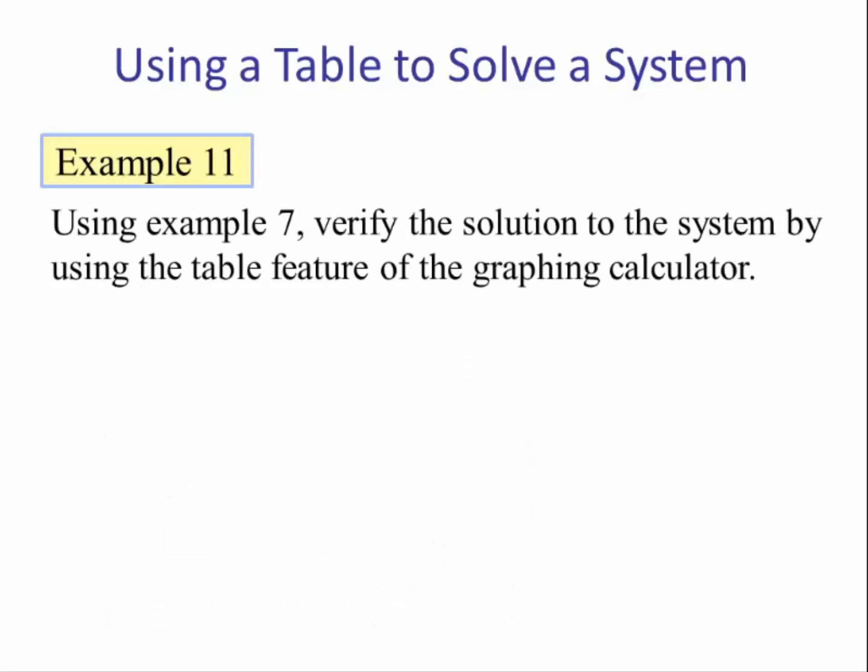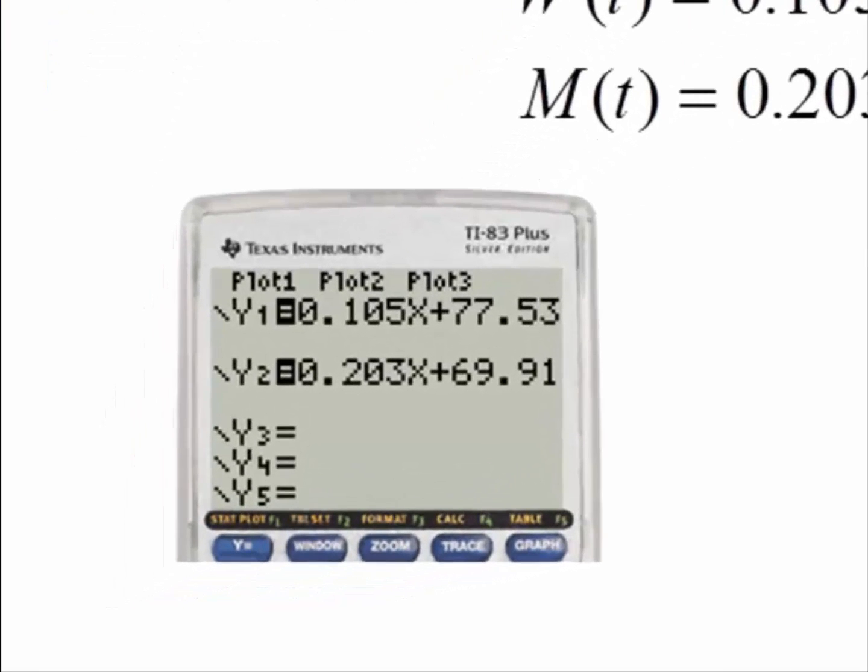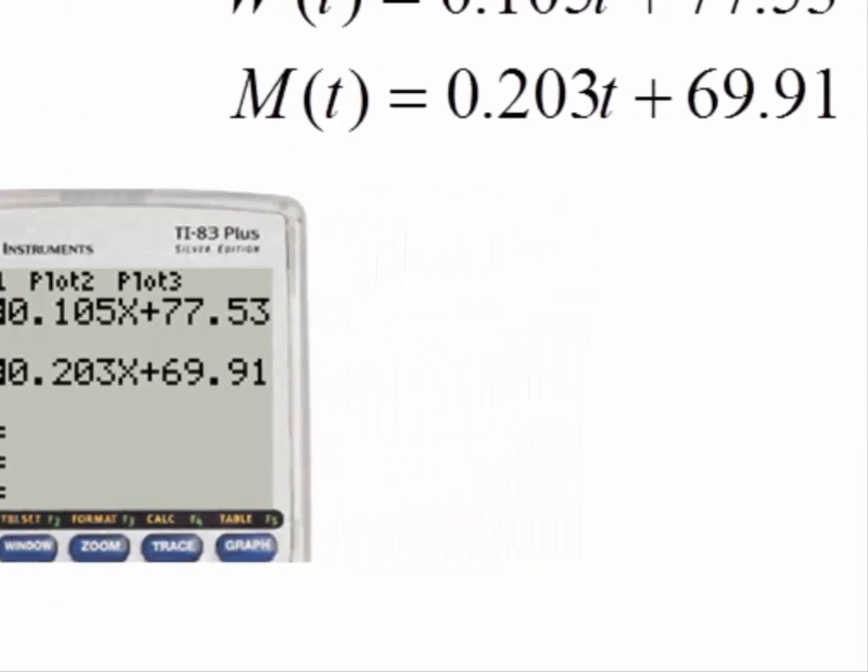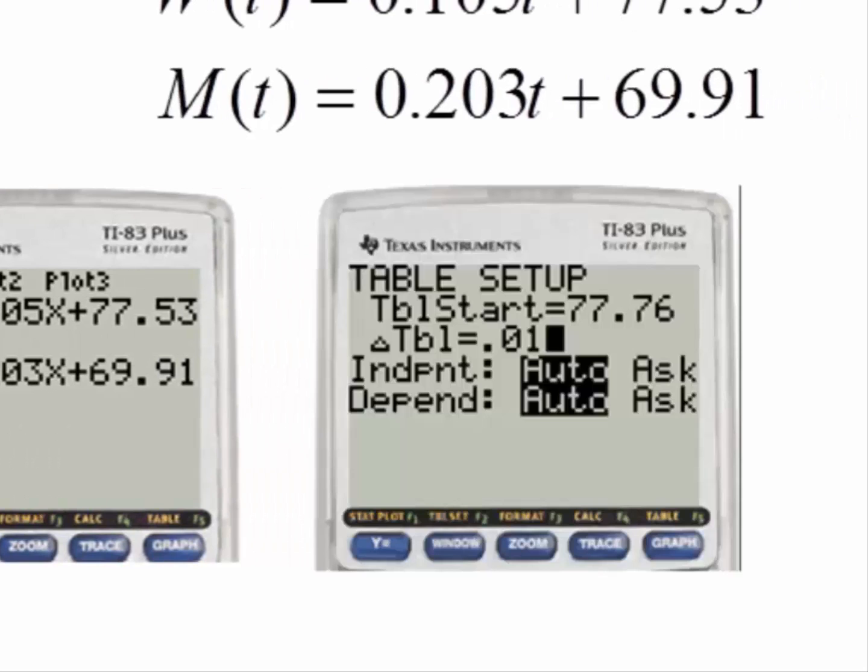Example 11: Using Example 7, verify the solution to the system by using the table feature of the graphing calculator. So if you recall, this is the model for women, this is the model for men. So using our graphing calculator, if we put the women in y1 and the model for the men in y2, and then we hit second and window, which is table set, we change to where the table will start at 77.76, and this is how much we count by. And let's count by .01 instead of 1.